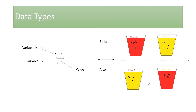You might say this is what we discussed previously — so what is the change? The twist here is that the capacity of glass C is different from glass A and glass B. In numbers: glass A and glass B each have a capacity of 300ml, but glass C has a capacity of only 150ml this time.